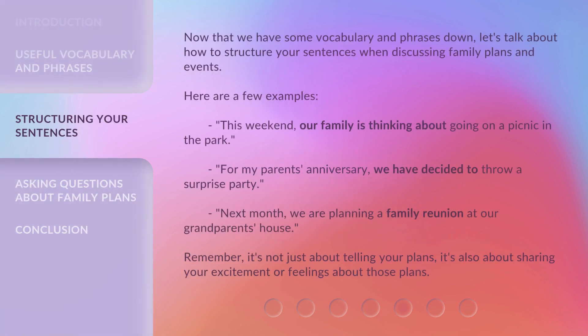Now that we have some vocabulary and phrases down, let's talk about how to structure your sentences when discussing family plans and events. Here are a few examples: This weekend, our family is thinking about going on a picnic in the park. For my parents' anniversary, we have decided to throw a surprise party. Next month, we are planning a family reunion at our grandparents' house. Remember, it's not just about telling your plans — it's also about sharing your excitement or feelings about those plans.